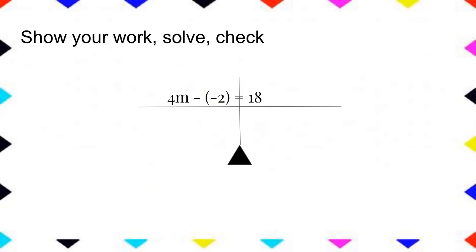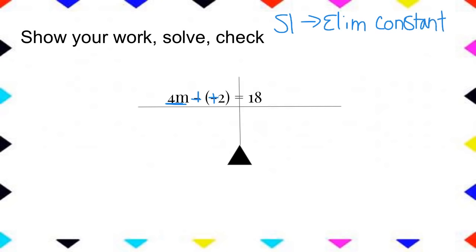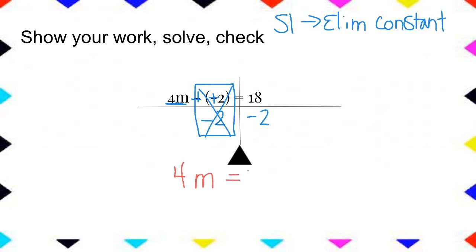Here's our next problem. I see an awful lot of subtraction signs — I don't really like all those subtraction signs. Let's fix that first. I'm going to change this to addition and change this to a positive two. Now I'll go ahead and do my steps. Remember step one: eliminate the constant. That's this two, and the opposite of adding two is subtracting two. I can't do something to one side without also doing it to the other. This creates an inverse pair or zero, leaving four M's on one side and 16 on the other.